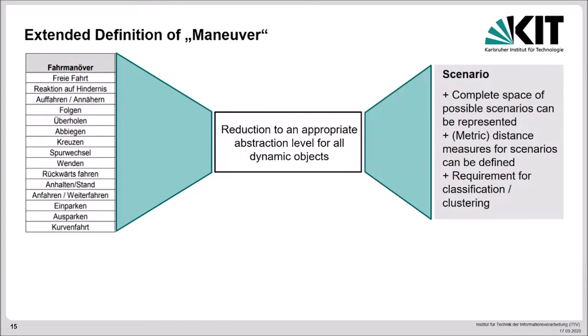To be applied to the concept here, we need a reduction to an appropriate abstraction level for all dynamic objects for the maneuver definition. This is needed to enable a representation of a complete space of possible scenarios and to establish distance measures between scenarios which is a requirement for a later clustering of all resulting scenarios.